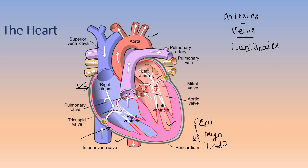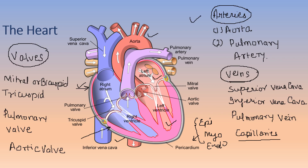Capillaries are the narrowest blood vessels, supplying nutrients to tissues and even individual cells. There are two types of arteries in the heart: the aorta and the pulmonary artery. The aorta transports oxygenated blood to the body. While arteries normally carry oxygenated blood, the pulmonary artery is the only artery that carries deoxygenated blood.